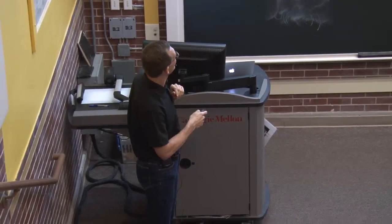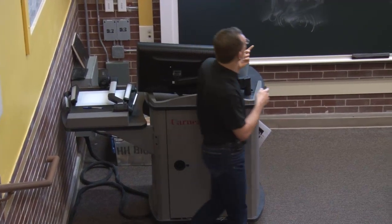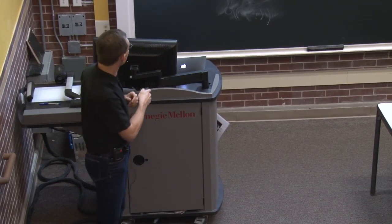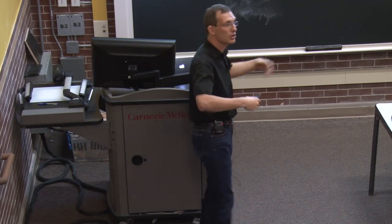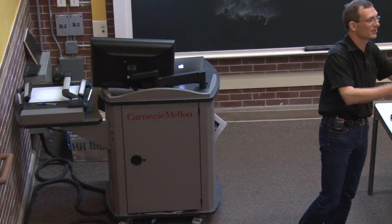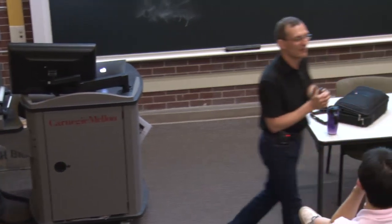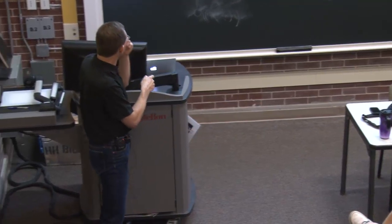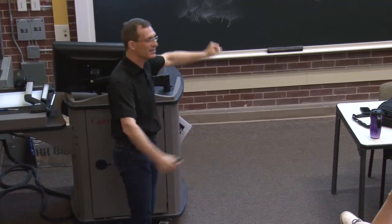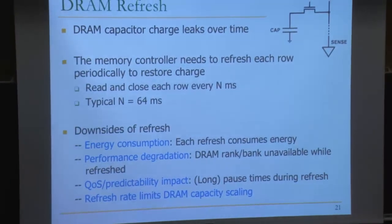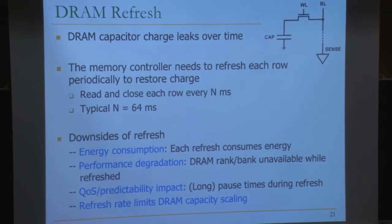Four million rows refreshed every 64 milliseconds — that's a lot of energy and a lot of waste. This leads to performance degradation: when you're refreshing a DRAM row, the rank or bank is unavailable, so memory requests to that bank cannot proceed. It also leads to quality-of-service impact — long pause times every 64 milliseconds. And this refresh rate limits DRAM capacity scaling: as you increase DRAM capacity, this becomes a much bigger problem.